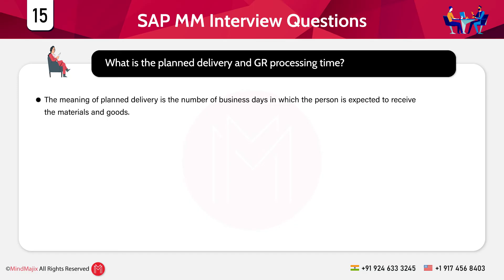The next question is: what is planned delivery and GR processing time? Planned delivery is the number of business days in which a person is expected to receive materials and goods. GR processing time is the number of business days in which a person has to inspect and place the material in storage after obtaining the goods.